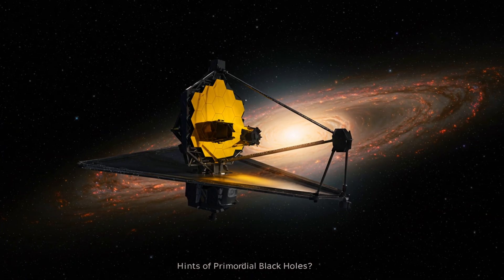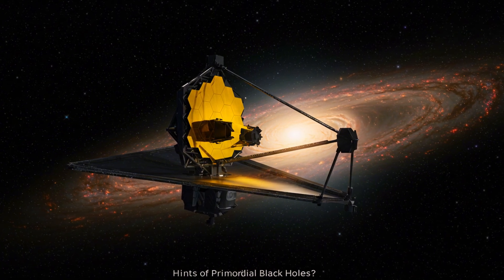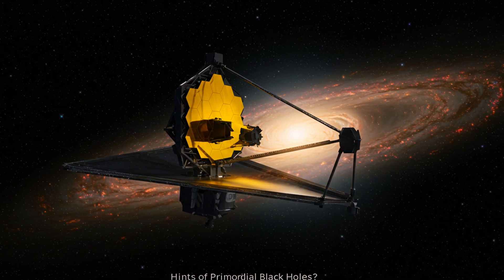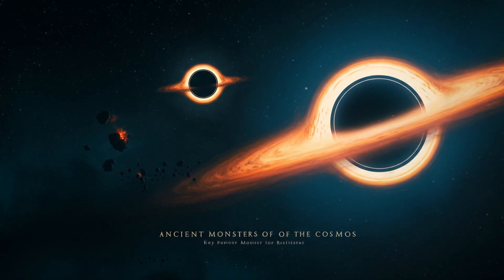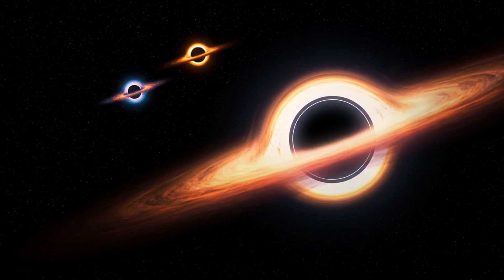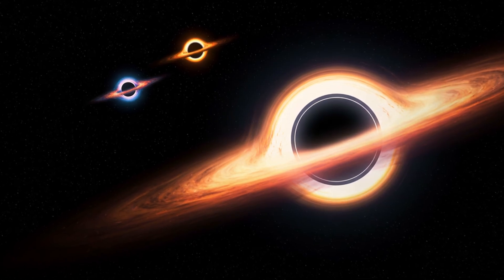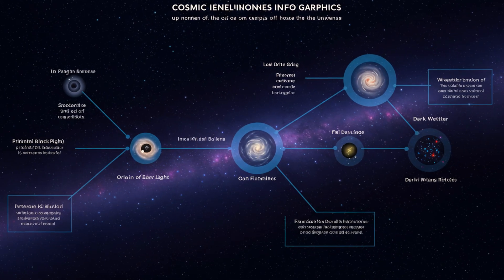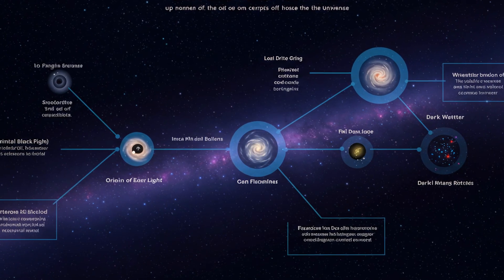So, what have we learned? The James Webb Space Telescope may have uncovered the first hints of primordial black holes, ancient monsters that could predate the very first stars. If true, this would rewrite the story of the early universe. Black holes, not stars, may have been the first beacons of light. They could explain the rapid rise of supermassive black holes, and perhaps even the mystery of dark matter.